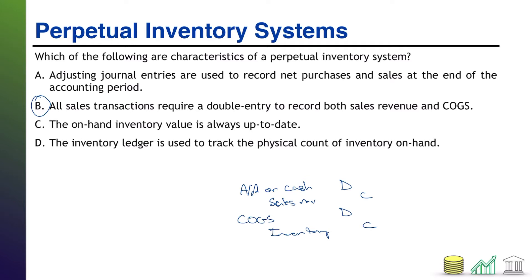C: the on-hand inventory value is always up to date. That is also true. Because you are recording every purchase and every sale as it happens, the on-hand balance is, in fact, always up to date.